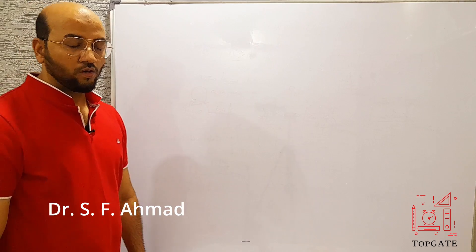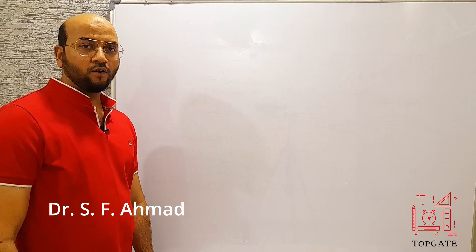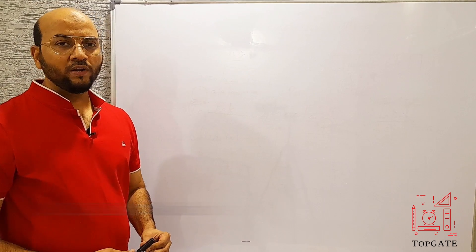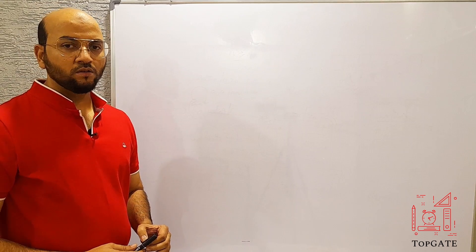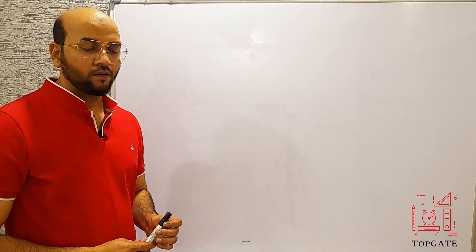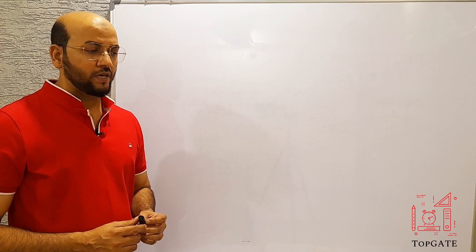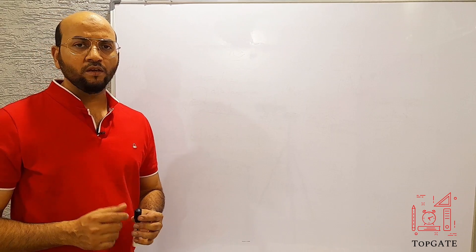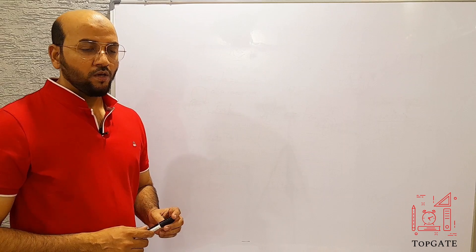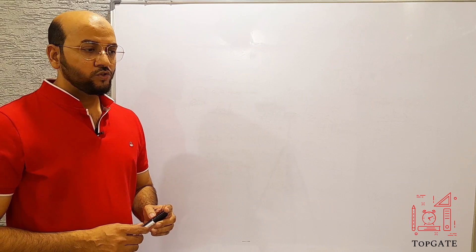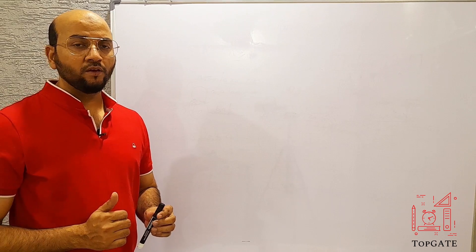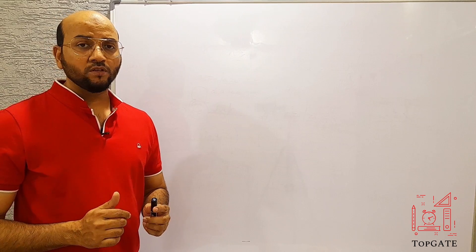Hello students, welcome to the channel Top Gate. Today we'll discuss a very important question that is often asked in GATE exams as well as in many university exams. That question is: we have to design a PDA for the language which contains equal number of A's and equal number of B's.